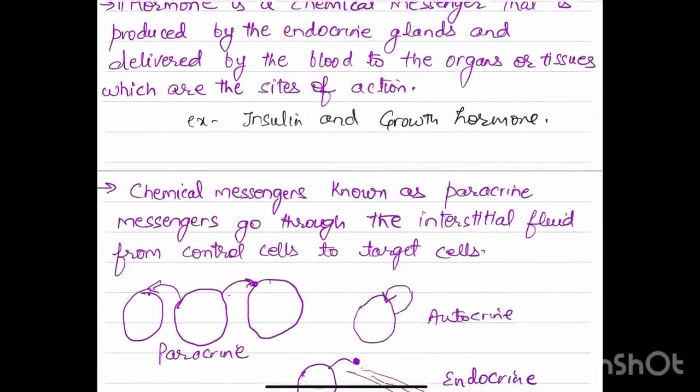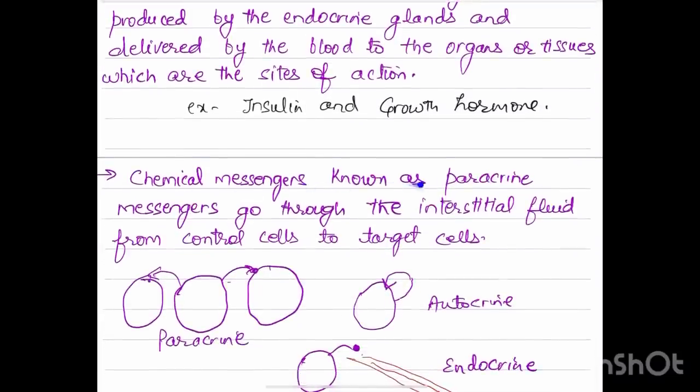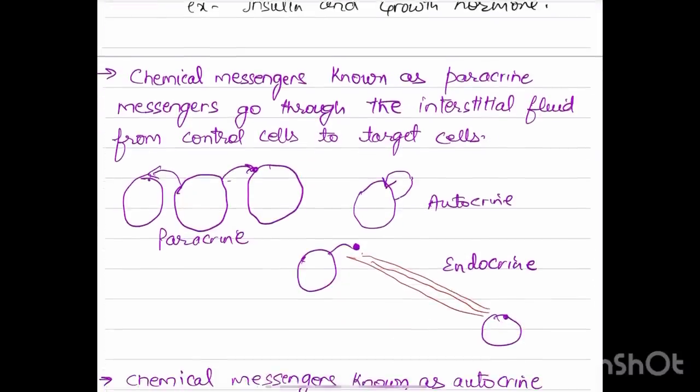Chemical messengers known as paracrine messengers go through the interstitial fluid from control cells to target cells. There are three types we have discussed in our previous videos: paracrine, autocrine, and endocrine.